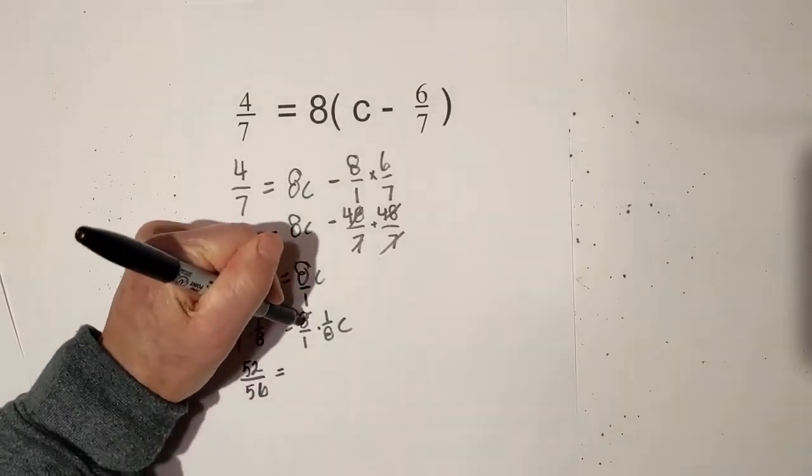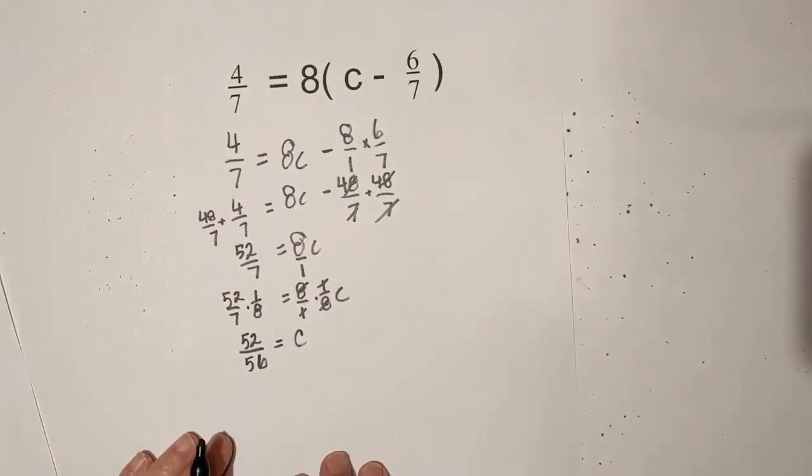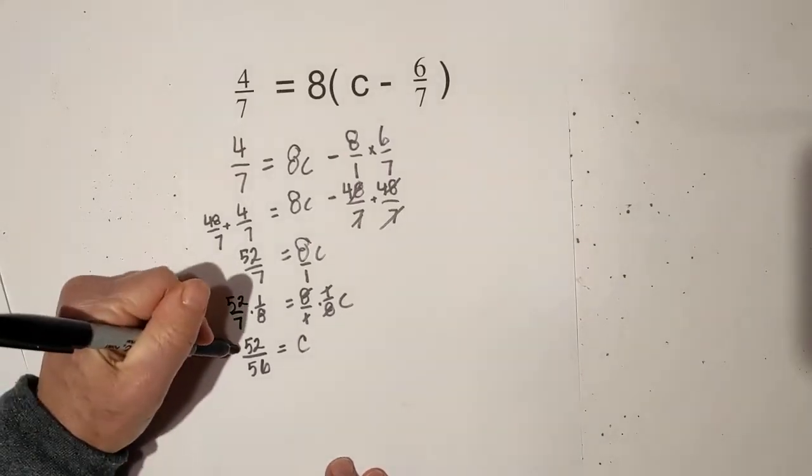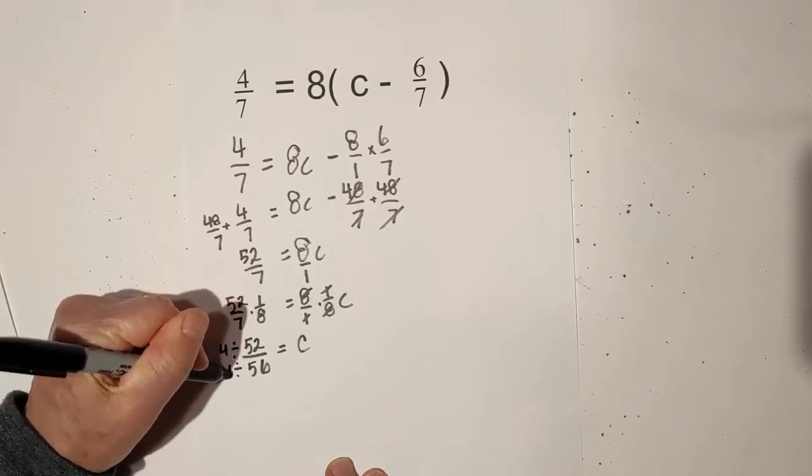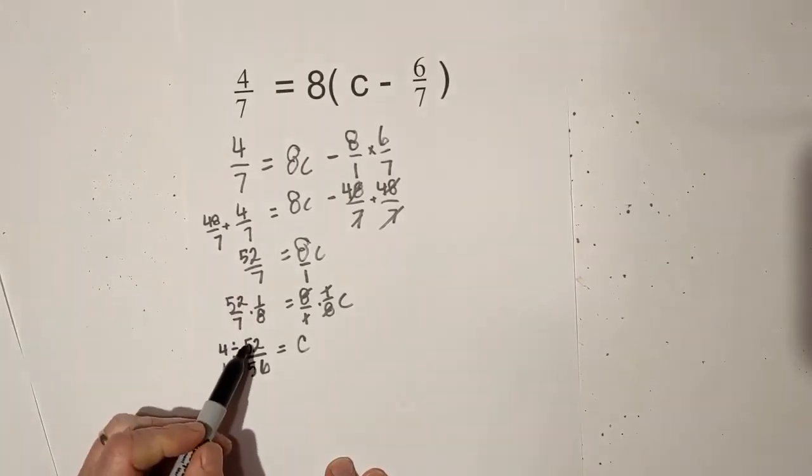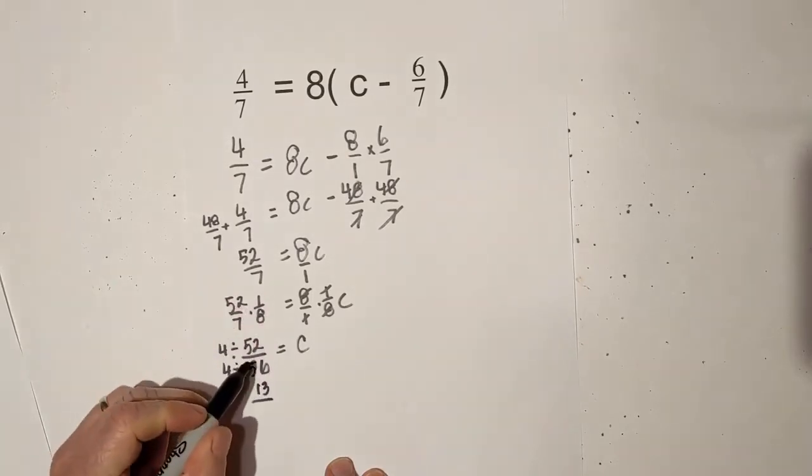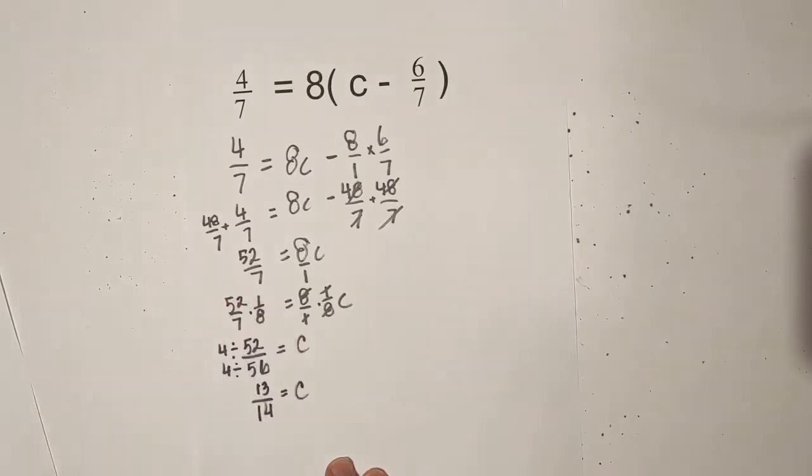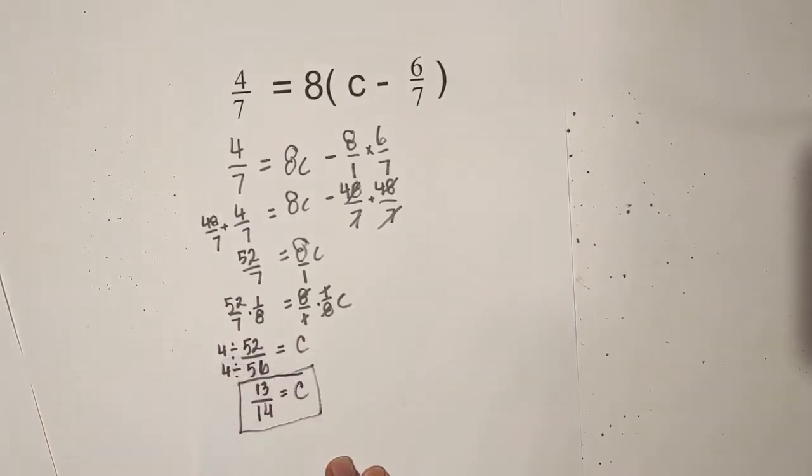These cancel. So I'm down to the answer: c is equal to 52 over 56. Now I can reduce it by dividing each side by four. So four goes into 52 thirteen times and four goes into 56 fourteen times. So there is your answer, c is equal to 13 fourteenths.